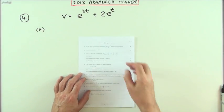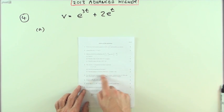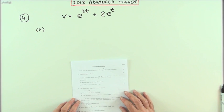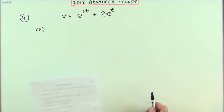Number 4 from the 2013 Advanced Higher Maths. Here we've got velocity, acceleration, distance, motion equations, or for the proper title, kinematics. What does it say? Find the acceleration of p at a time t of this particle p.